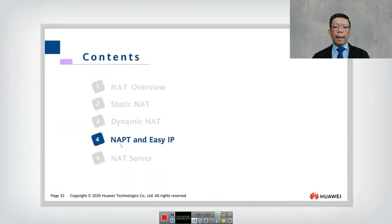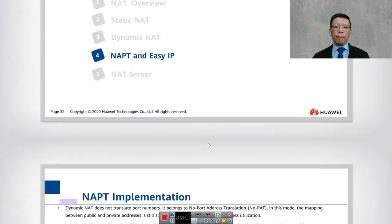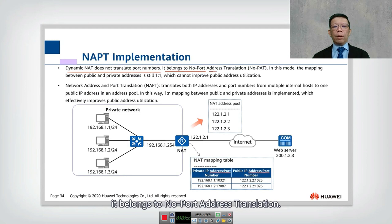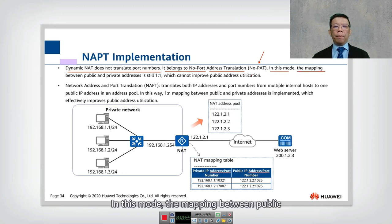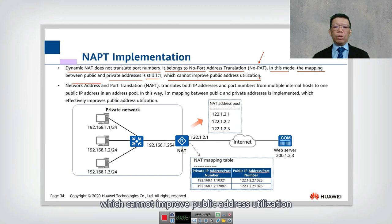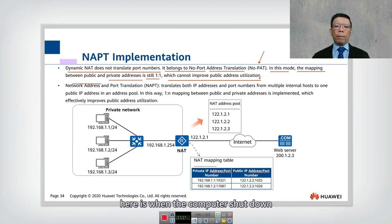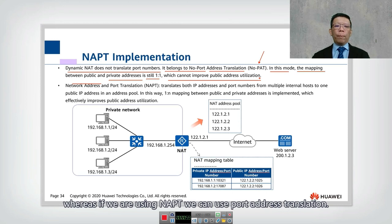Next we look into chapter four: NAPT and Easy IP. Dynamic NAT does not translate port numbers — it belongs to no port address translation (no PAT). In this mode, the mapping between public and private address is still one-to-one, which cannot improve public address utilization. To recap: static NAT is one-to-one and reserved even when the computer shuts down; dynamic NAT is still one-to-one but the public IP can be reused when the computer shuts down. With NAPT, we use port address translation.